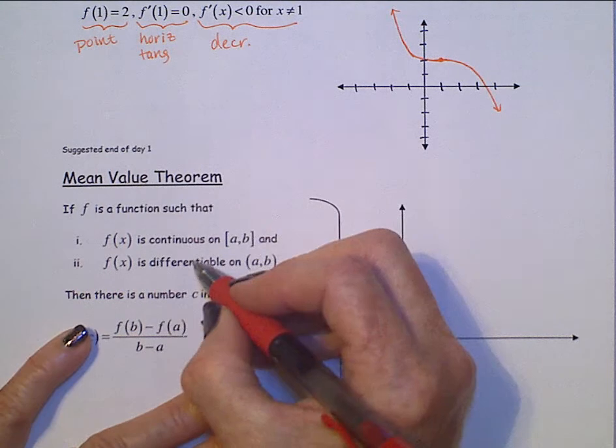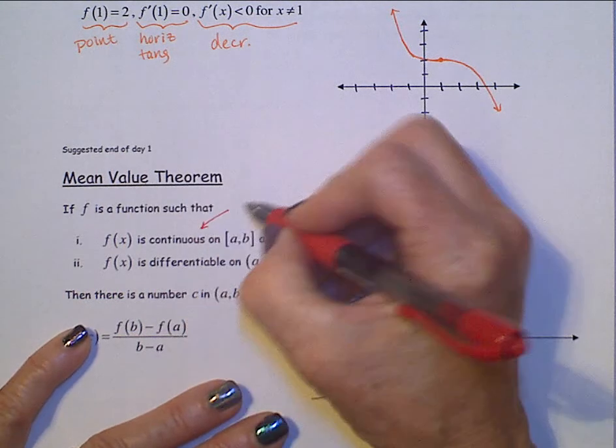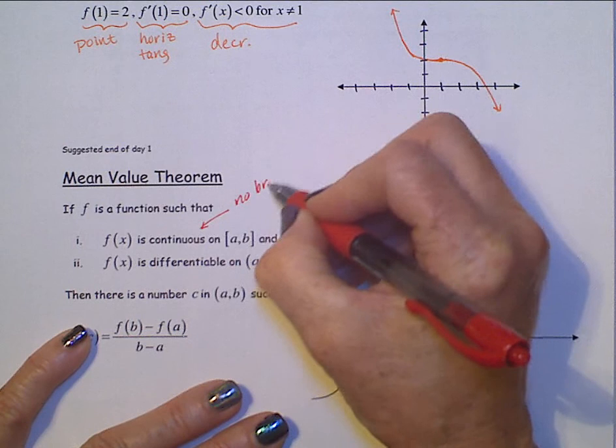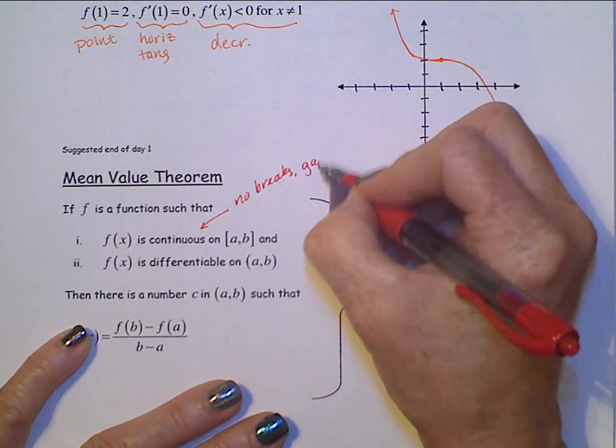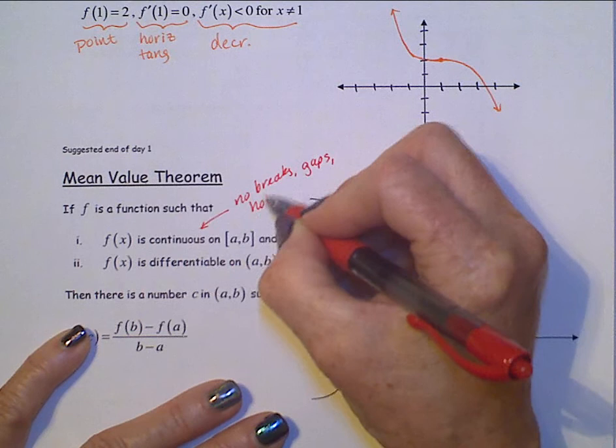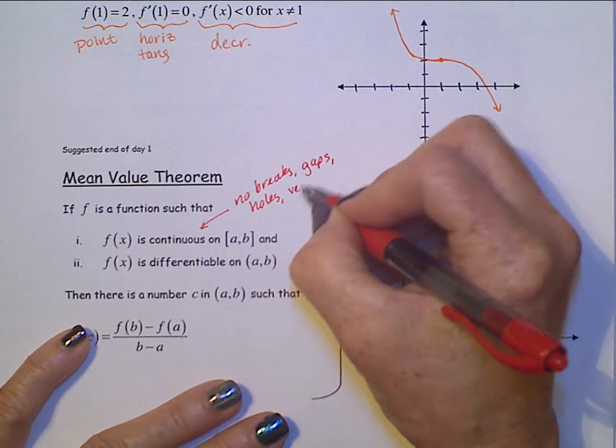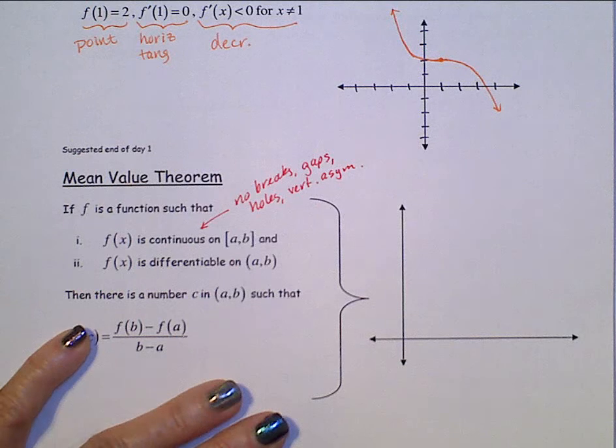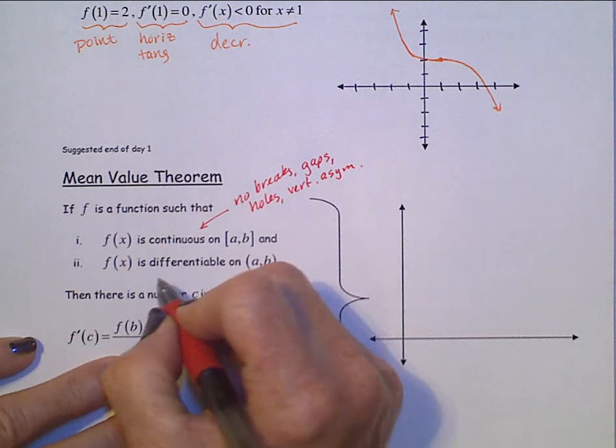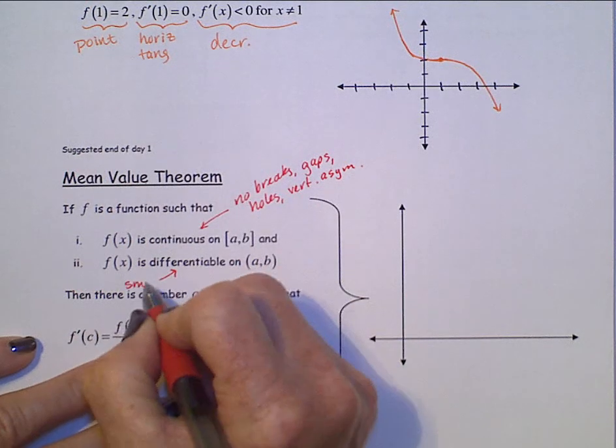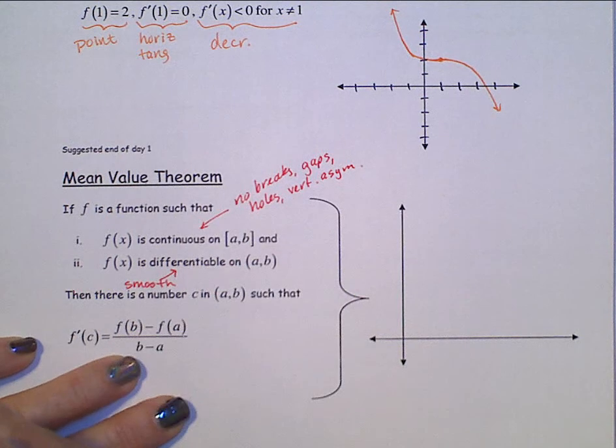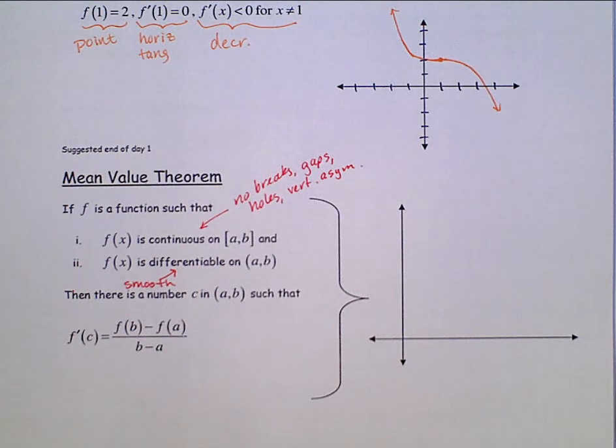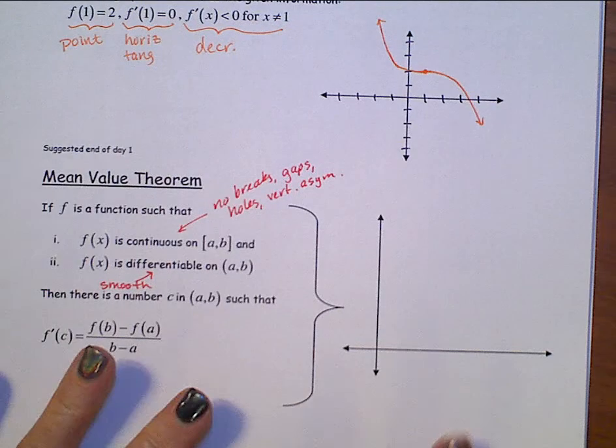f of x is continuous on that interval. So, no breaks, gaps, holes, vertical asymptotes. Differentiable, smooth, so no corners, no cusps, no vertical tangents in there. All right, so let's draw this.